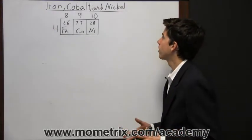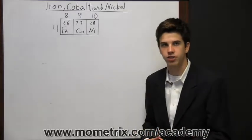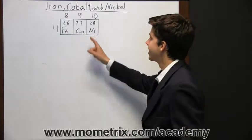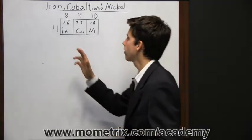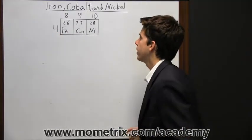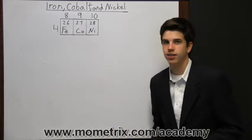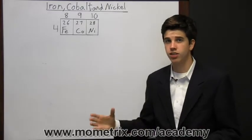The elements iron, cobalt, and nickel are three interesting elements. They're in groups eight, nine, and ten, so they're in different groups, but they all are in the same period, row period four. So here you have iron, cobalt, and nickel, and they have different atomic numbers as well.